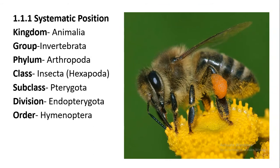Then coming to the order, that is Hymenoptera. Here, there are a total of four transparent wings present, and these are stinging animals — especially the female, who has a sting apparatus.